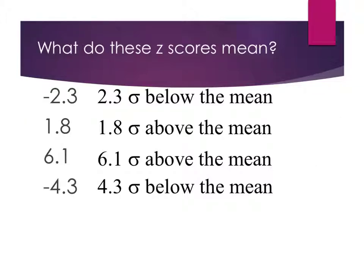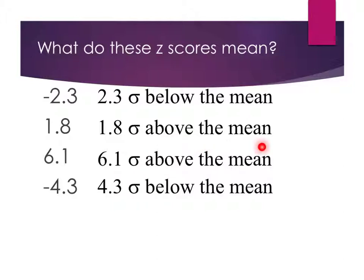This slide tells us what z-scores mean. If my calculation gives a negative 2.3 z-score, I'm 2.3 standard deviations below the mean. If I get a positive 1.8, I'm 1.8 standard deviations above the mean. So a negative z-score means below the mean, and a positive z-score means above the mean.